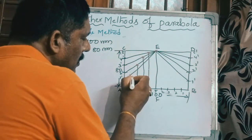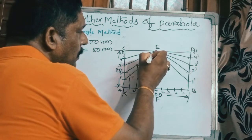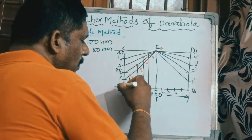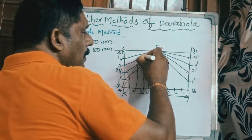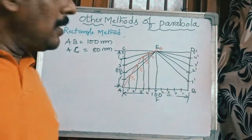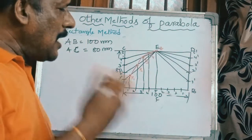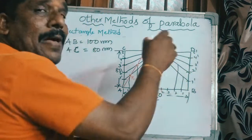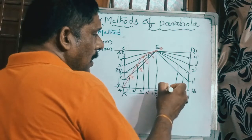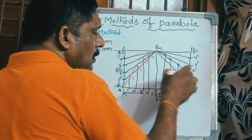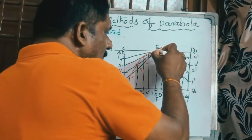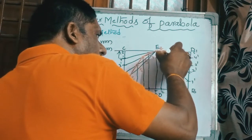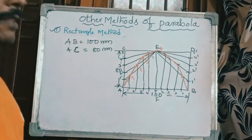Mark the intersection points: P1, P2, P3, P4, and P5 (which is E itself). Now join all five points with a smooth curve from corner A through P1, P2, P3, P4, to P5. Do the same on the other side. The resulting smooth curve is the parabolic curve drawn by the rectangle method.